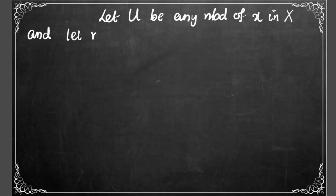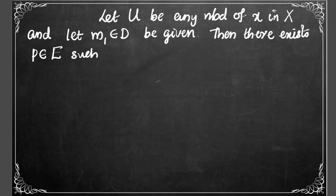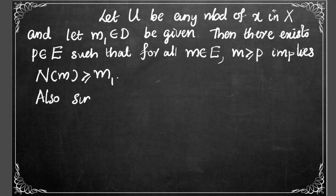Let U be any neighborhood of the point x, and let us consider an arbitrary element, say m₁, of the directed set D. Using the definition of subnet, and since m₁ is an arbitrary point of D, we can say that there exists some p element of E such that for all m element of E, m follows p implies N(m) follows m₁.